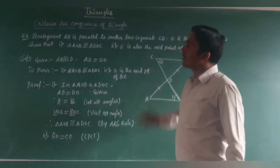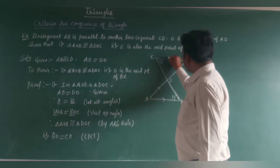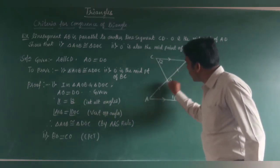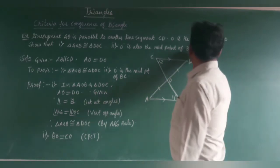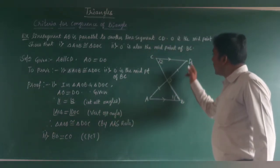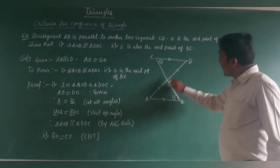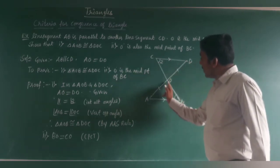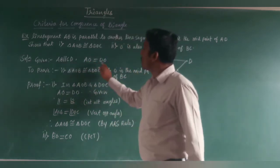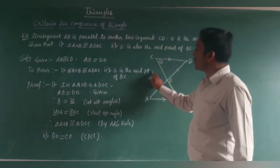Now I will discuss one example based on the AAS congruence rule. Line segment AB is parallel to line segment CD, and O is the midpoint of AD, meaning AO = DO. We need to prove: first, triangle AOB is congruent to triangle DOC; and second, O is also the midpoint of BC.